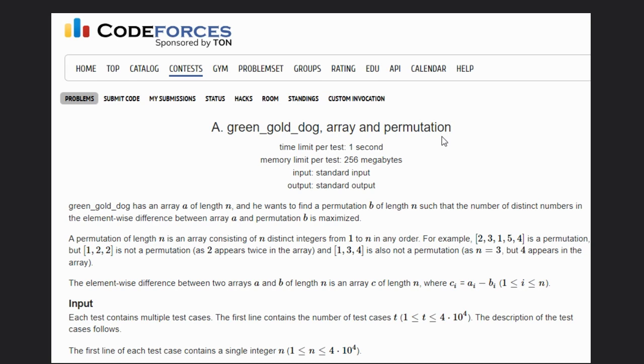Hello guys, welcome back to our YouTube channel. Today we are going to see the Codeforces problem, and that is green_gold_dog array and permutation.